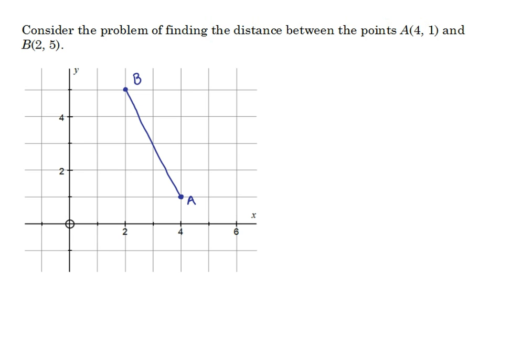If we think about this, there's a fairly obvious right-angled triangle here, for which we know the vertical and horizontal lengths, and therefore we can use Pythagoras' theorem to find the length AB. B has an x-coordinate of 2 and A has an x-coordinate of 4, so the horizontal distance is 2 — we can calculate it as 4 minus 2. The vertical distance: B has a y-coordinate of 5, A has a y-coordinate of 1, so the distance between 1 and 5 is 4, calculated as 5 minus 1.